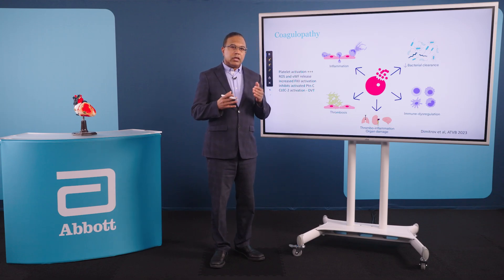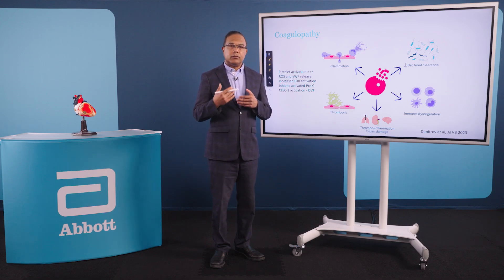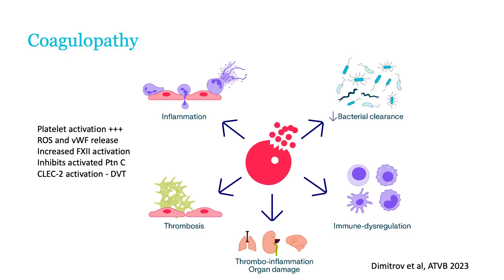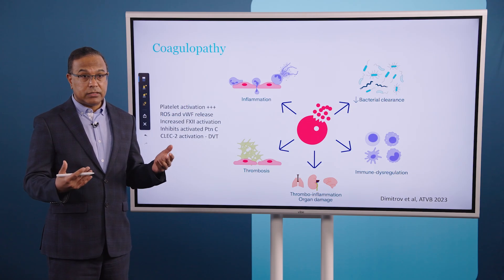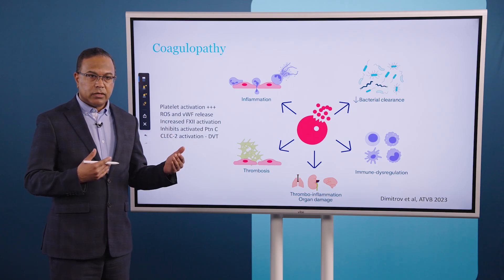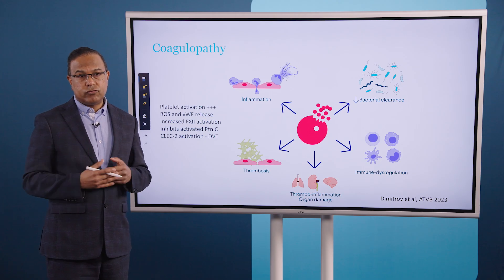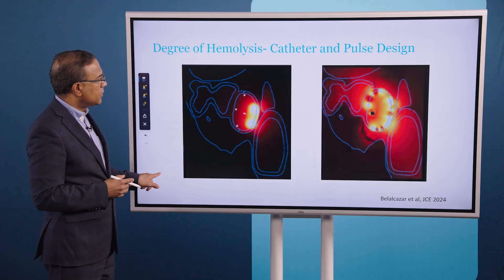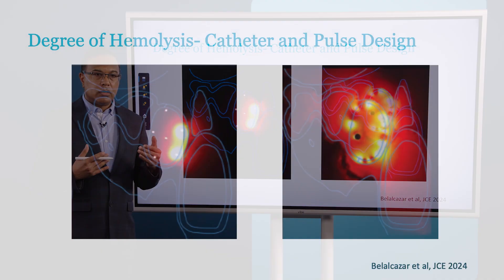One of the lesser known consequences of hemolysis is that it can promote a profound coagulopathy. In particular, it can really activate platelets and von Willebrand's factor. We always give intravenous heparin and oral anticoagulants to our patients undergoing AF ablation, but heparin has absolutely no effects on platelets. So if you're causing a lot of hemolysis, in addition to the risk of renal injury, there's also the risk of coagulopathy and potential thrombus formation.